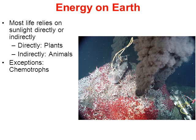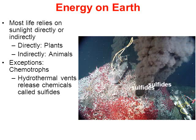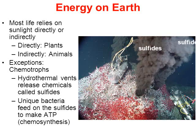The exceptions are the chemotrophs. Here's a picture of an underwater hydrothermal vent with black smoke billowing out — sulfide gases being released into ocean water from a crack in the crust. There are bacteria down there called chemotrophs that feed on those sulfides in order to make their ATP. This process is called chemosynthesis. Even though this is a rare exception, most life on Earth relies directly or indirectly on the sun to make their energy.